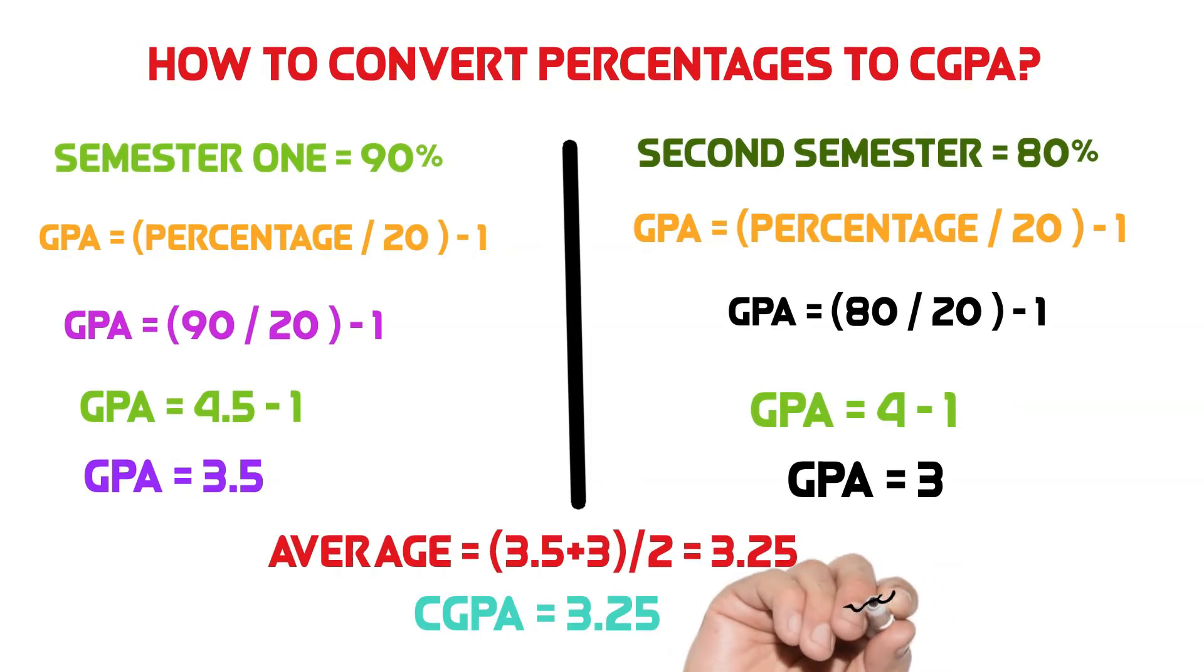Now we find the average. We add 3.5 and 3 and divide 2 to get CGPA 3.25 number. In this way, we find the CGPA from percentage.